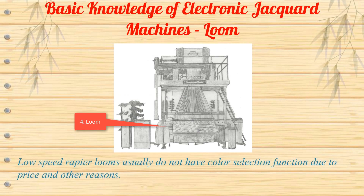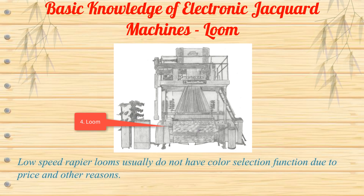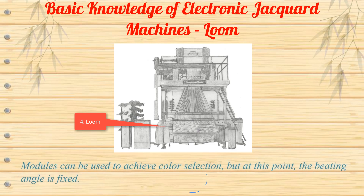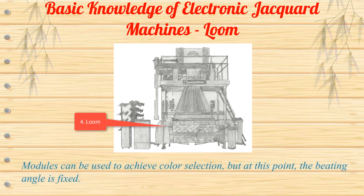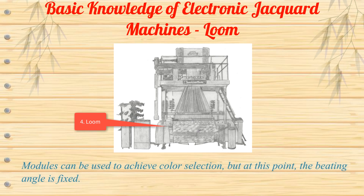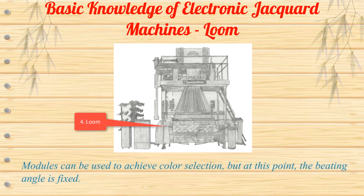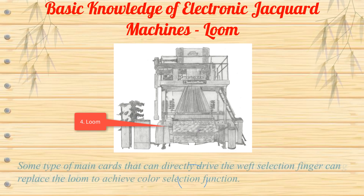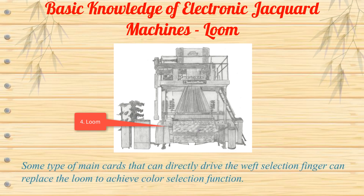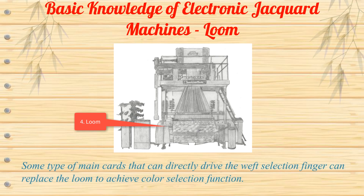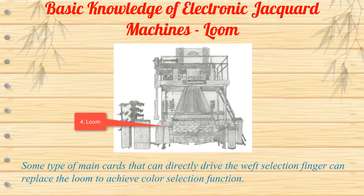Low-speed rapier looms usually do not have a color selection function due to price and other reasons. Modules can be used to achieve color selection, but at this point the beatup angle is fixed. Some types of main cards that can directly drive the weft selection finger can replace the loom to achieve the color selection function.